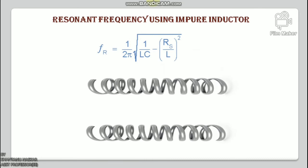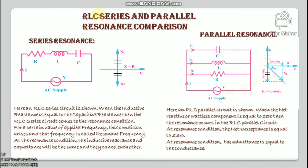Now comparing series and parallel resonance circuits. For series RLC: resonance occurs when XL = XC; for parallel RLC: resonance occurs when net susceptance = 0 and admittance = conductance. Similarities: (1) power factor is unity at resonance for both; (2) resonant frequency fr = 1/(2π√LC) for both; (3) bandwidth = fr/Q for both; (4) half-power frequency relationship ω₀ = √(ω₁·ω₂) for both.